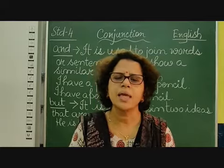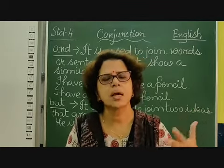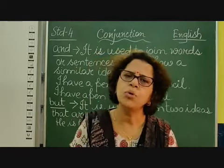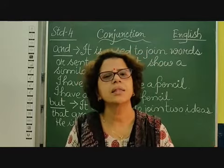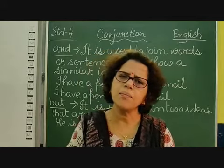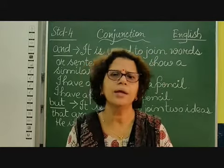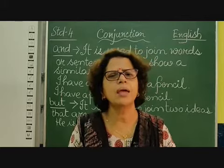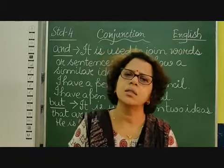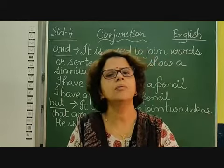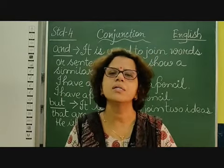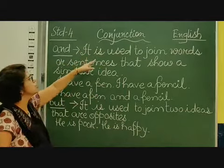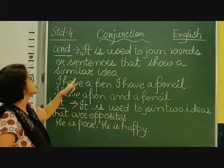Like, the stars shine in the sky. The moon also shines in the sky. Now both are the same — stars are shining in the sky, moon is also shining in the sky. So can we use 'and' to join the two sentences? The stars and the moon shine in the sky. So when there are similar ideas, 'and' is used to join words or sentences that show a similar idea.